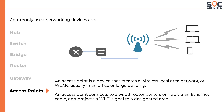Next we have ACCESS POINTS. An access point is a device that creates a Wireless Local Area Network, or WLAN, usually in an office or large building. An access point connects to a wired router, switch, or HUB via an Ethernet cable and projects a Wi-Fi signal to a designated area.